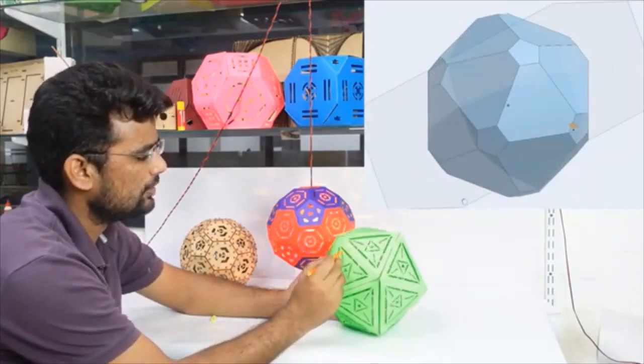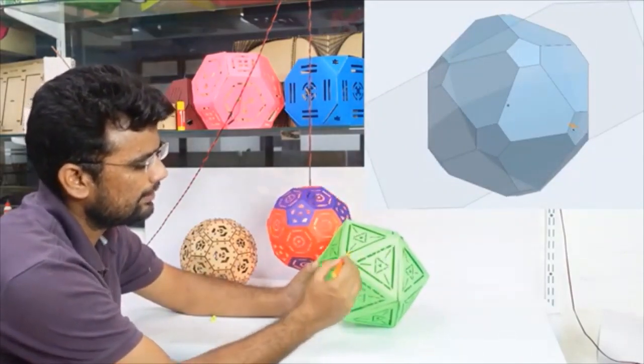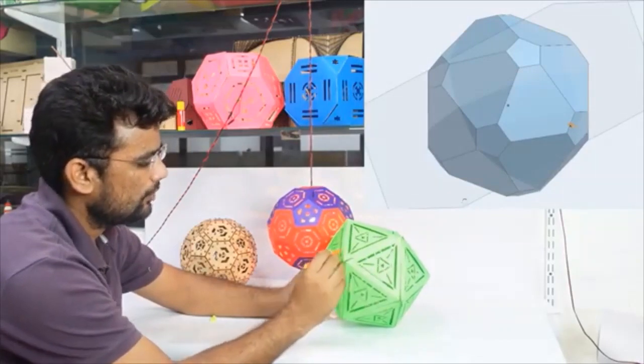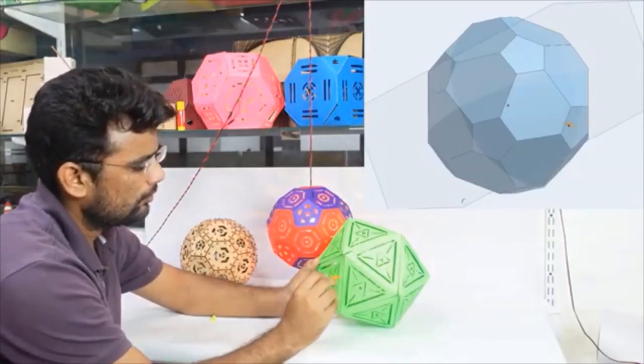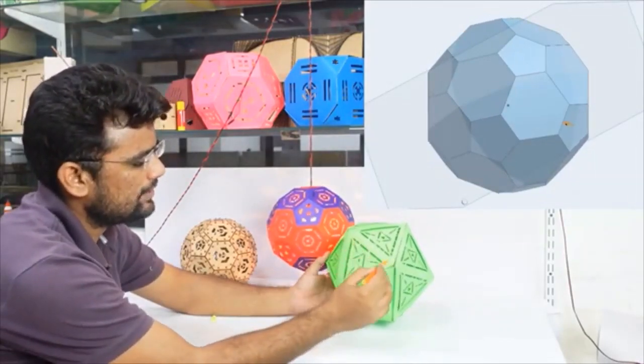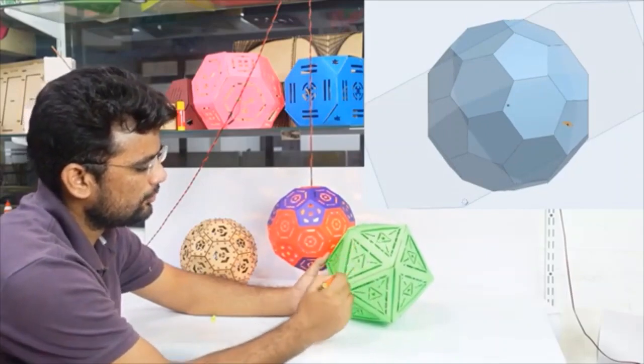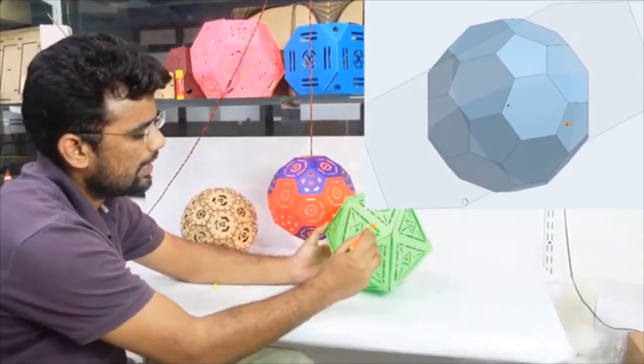If I join these triangular faces, a hexagonal face is obtained. So in the structure that is made here, there are only pentagons and hexagons, all regular pentagons and all regular hexagons.